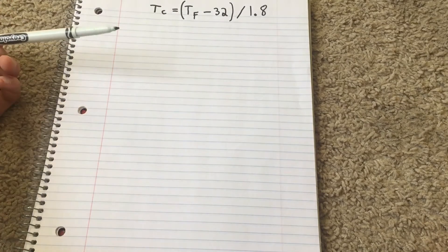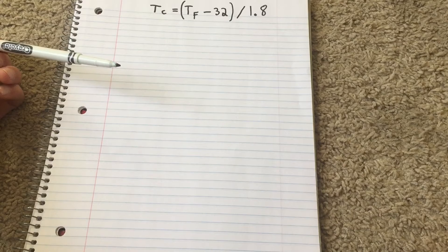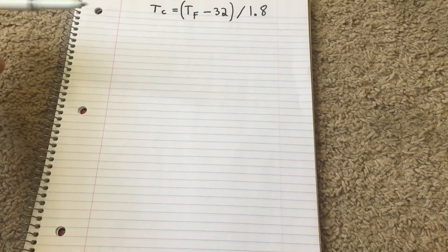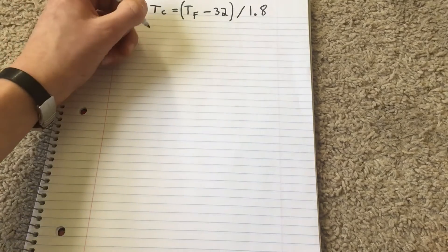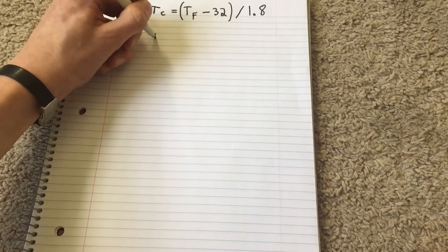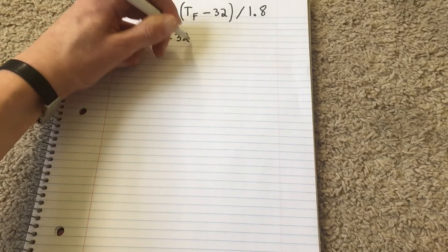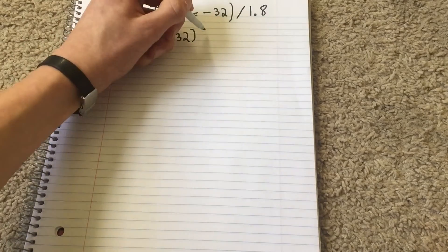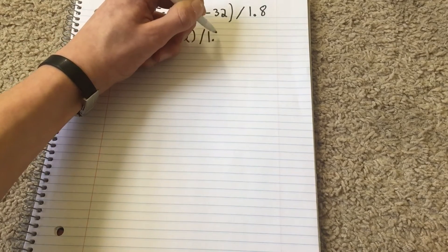All right, so our example is 41 degrees Fahrenheit. We're going to do 41 minus 32 in parentheses, divided by 1.8.